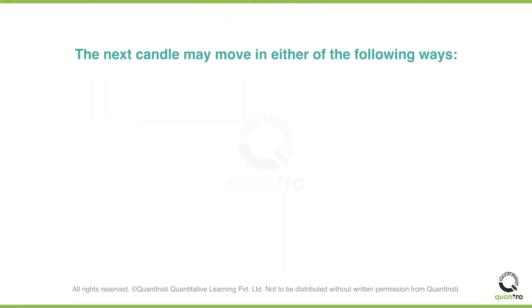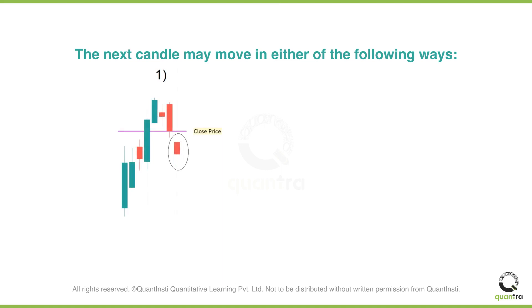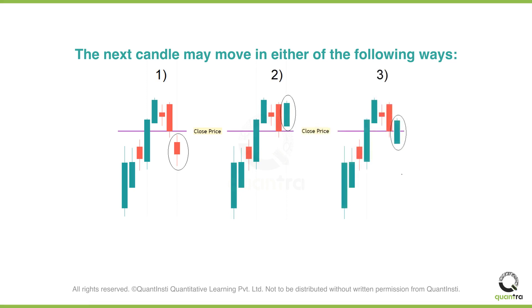Thus the next candle may move in either of the following three ways from the close. Firstly, the price may move by approximately 1.32 points on the lower side. Secondly, the price may move by approximately 1.32 points on the higher side. And lastly, the price could also move in a range of 1.32 points, but in both directions partially.